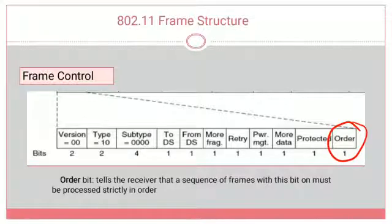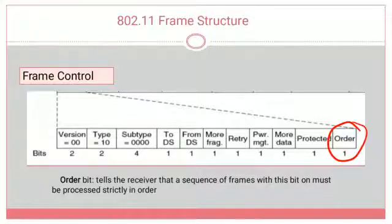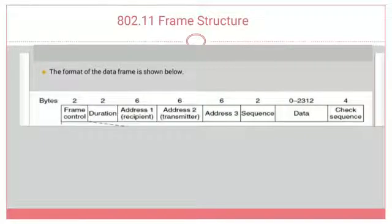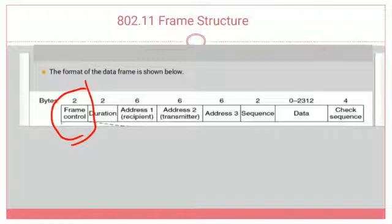To summarize frame control: it is allocated 2 bytes (16 bits) and consists of 11 subfields — version, type, subtype, ToDS, FromDS, more fragment, retry, power management, more data, protected, and order — each allocated specific bits totaling 16 bits. This is the first field in the 802.11 frame structure. Next we will look at duration and the remaining fields.